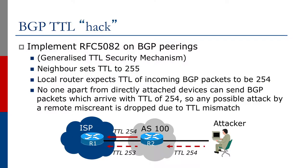We're now going to talk about BGP TTL hack. It is advisable to implement RFC 5082 on BGP pairings, otherwise known as TTL hack. This is a generalized TTL security mechanism. A BGP neighbor sets TTL to 255. A local router expects TTL of incoming BGP packets to be 254. No one, apart from directly attached devices, can send BGP packets which will arrive with TTL of 254, so any possible attack by a remote miscreant is dropped due to TTL mismatch, as shown on the diagram.